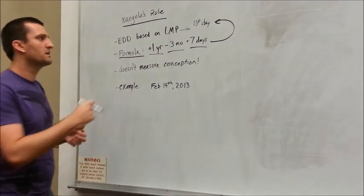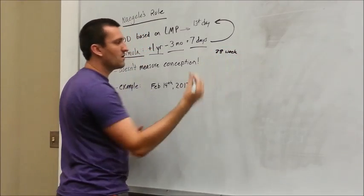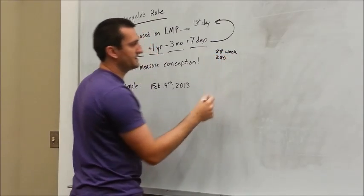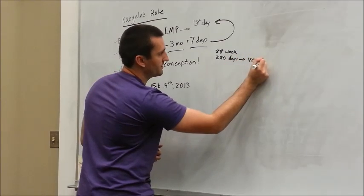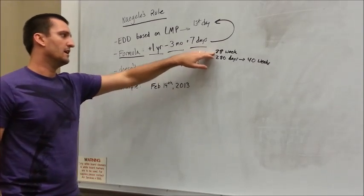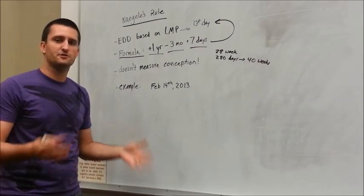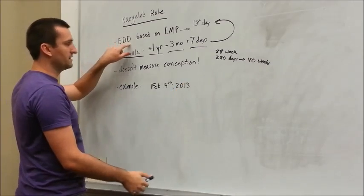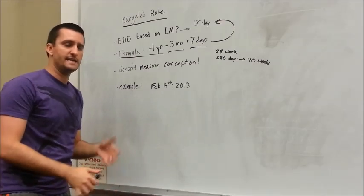So this takes into account a 28-day cycle. Not all women have a 28-day cycle. It also accounts for the fact that a typical pregnancy is going to be 280 days, which equates to 40 weeks. So those are our assumptions: the woman has a typical 28-day cycle, meaning on day 14 she's going to have the LH surge releasing the egg, and also that the pregnancy will last 280 days or 40 weeks.